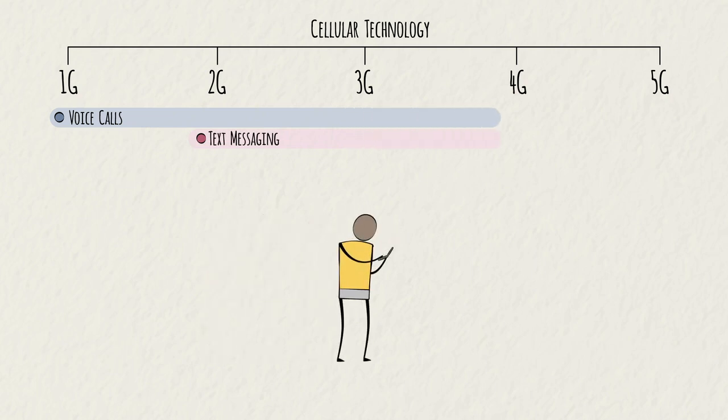3G increased data transmission speed up to 2 megabytes per second, enabling the first smartphones with full internet capabilities.